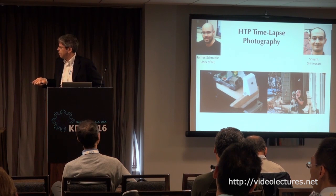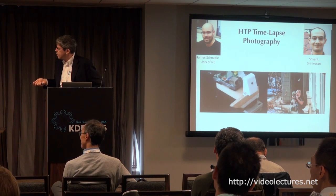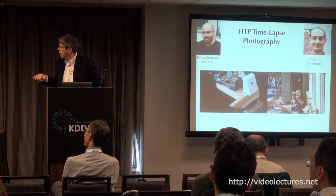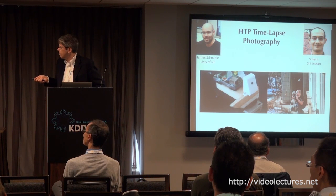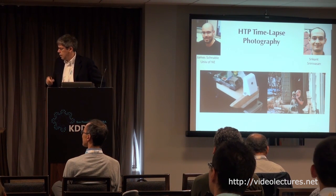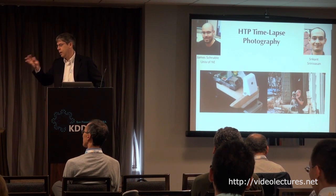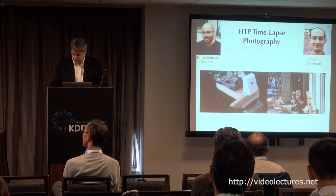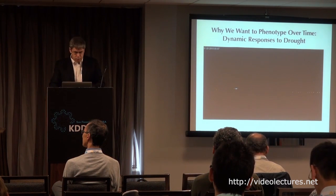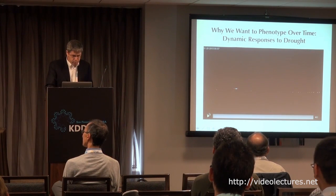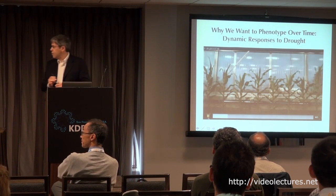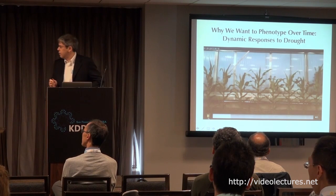Since then, Srikant Srinivasan, with others on my team, has developed this into a more robust system and deployed it in the field. Some data from James: this is a series of genotypes in a greenhouse — multiple genotypes being drought stressed. What I want you to do is watch the leaves, the lower leaves on the right-hand side initially.